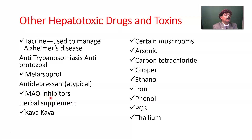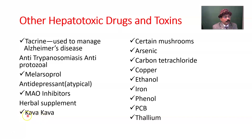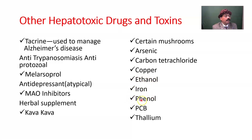MAO inhibitors also carry a dangerous situation: when a person taking them consumes tyramine-containing foods, blood pressure may rise sharply — this is called serotonin syndrome. Kava kava, used for insomnia and muscle strain, may lead to liver damage. Other hepatotoxic toxins include certain mushrooms, arsenic and arsenic products, carbon tetrachloride, copper (a heavy metal), ethanol (alcohol), iron (a heavy metal), and phenol.